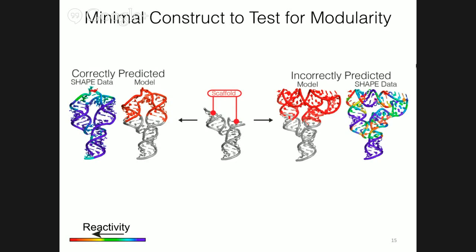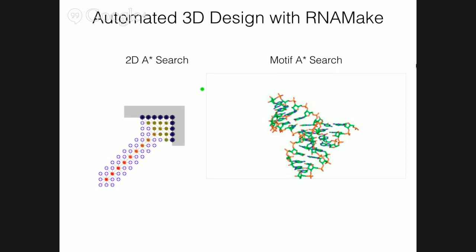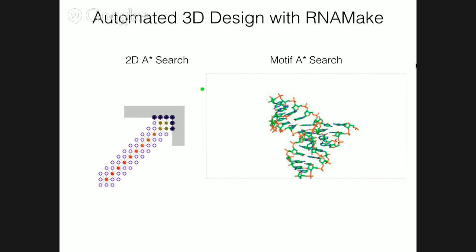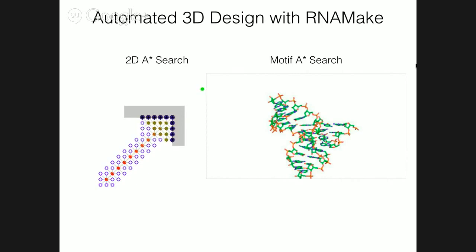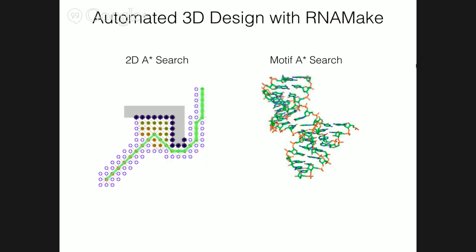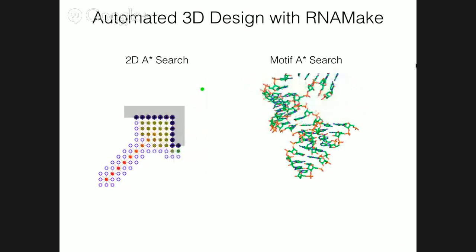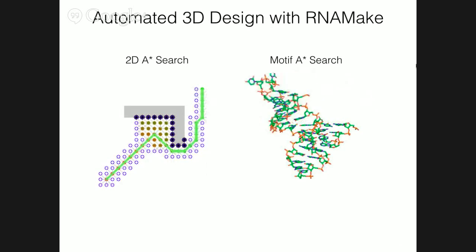So this is how we're going to be testing them, but how are we going to generate all these constructs? There are going to be a lot of them because there are lots of different motifs. The trick is to automate the process. I have developed RNA Make, which uses an A* search to build a path of motifs that can satisfy any design problem. On the left is what a traditional 2D A* search looks like — the goal is to find the shortest path from the red point to the green point. The open circles are points it's considering, where the shaded points are those already visited. We can use these same principles when making a path out of RNA motifs, where instead of circles I'm now using motifs, and I have the same boundary issues in that I cannot build over existing RNA. Using RNA Make, I'm able to build hundreds of thousands of constructs.